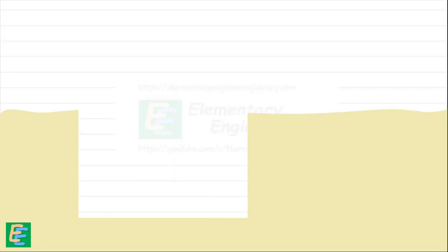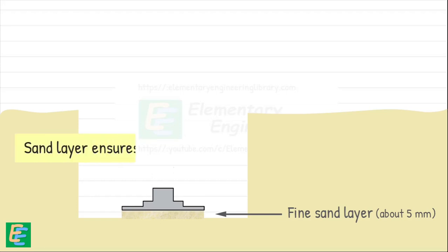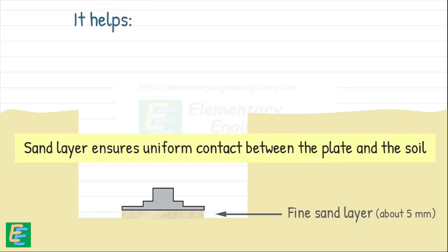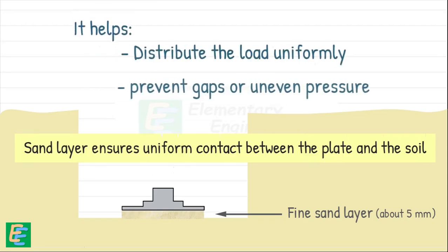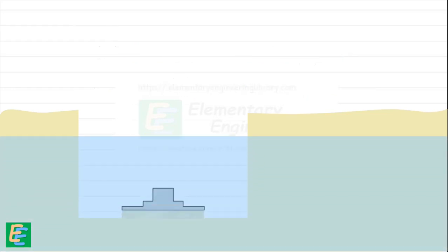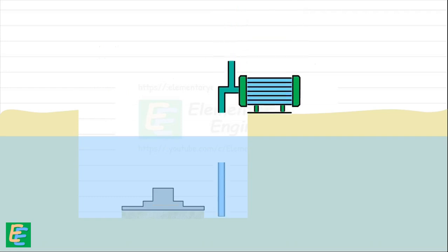At the center of this pit, we spread a thin layer of fine sand of about 5 mm and then place our test plate on top of it. This sand layer ensures uniform contact between the plate and the soil, helping to distribute the load evenly and prevent any gaps or uneven pressure. If the water table at our test site is above the level of the test pit, the pit will fill with water. In that case, we need to pump out the water and lower the water table at the level of the foundation before placing the test plate.